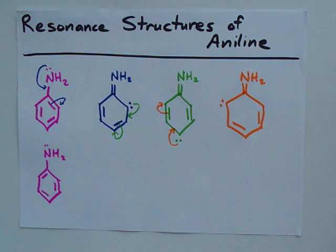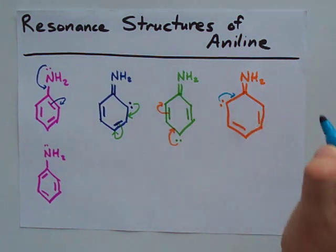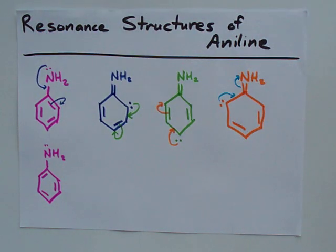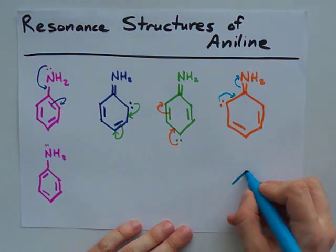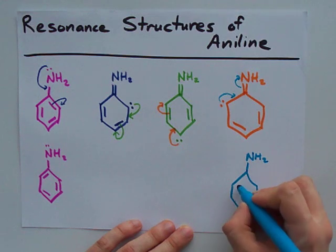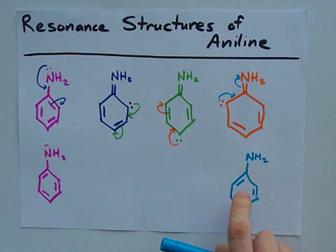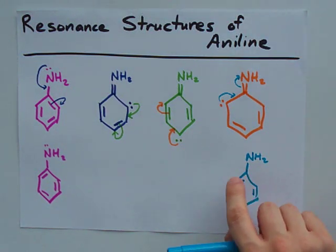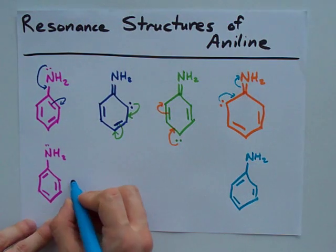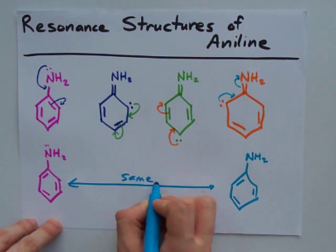Finally, we can have this lone pair push its way back into here, which ends up pushing this electron pair back to the end. That gives us our good old NH2 back. But we have our ring oriented this way, with the double bonds between these two carbons, these two carbons, and these two carbons — which are the exact same thing as what was already drawn, so you wouldn't want to draw them twice.